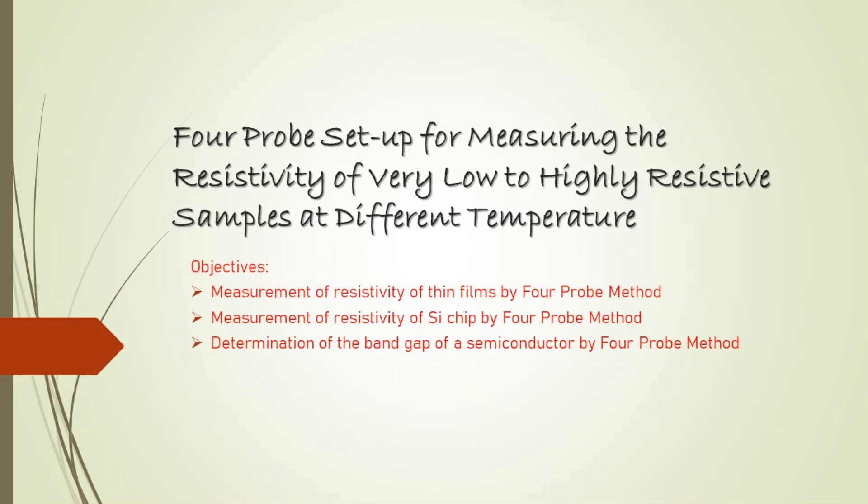The next experiment is the 4-probe experiment for measuring the resistivity of very low to high resistive samples at different temperatures. The objectives of this experiment are to measure the resistivity of thin films by the 4-probe method, measurement of resistivity of a silicon chip by the 4-probe method, and determination of the band gap of a semiconductor by the 4-probe method.